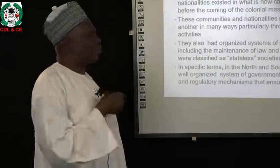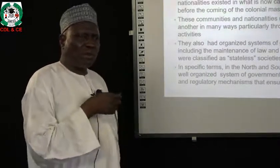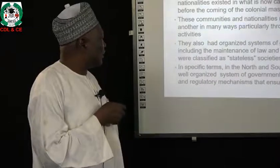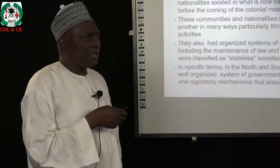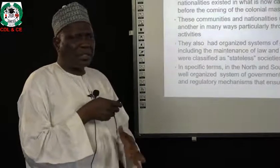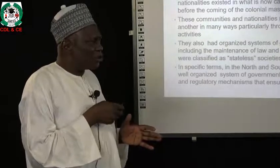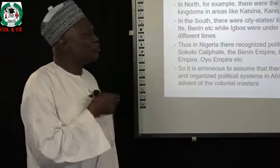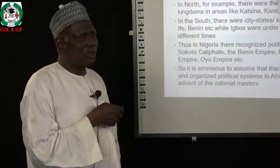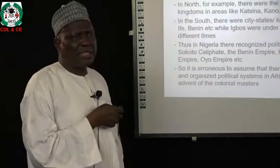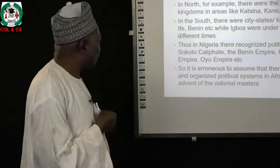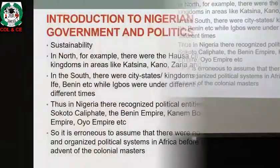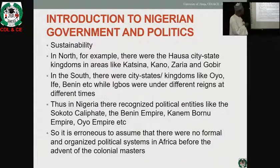In the east also, you have the Igbo society. Some writers allege that the Igbo society is a stateless society, but they are egalitarian and based on a lineage system — that is their own system of governance. So that goes to show that in the north, south, and west, before the coming of the colonial masters, they had a strong administrative and political system and related with each other through trading activities. It is therefore erroneous to assume that there were no formal and organized political systems in Africa before the advent of the colonial masters.